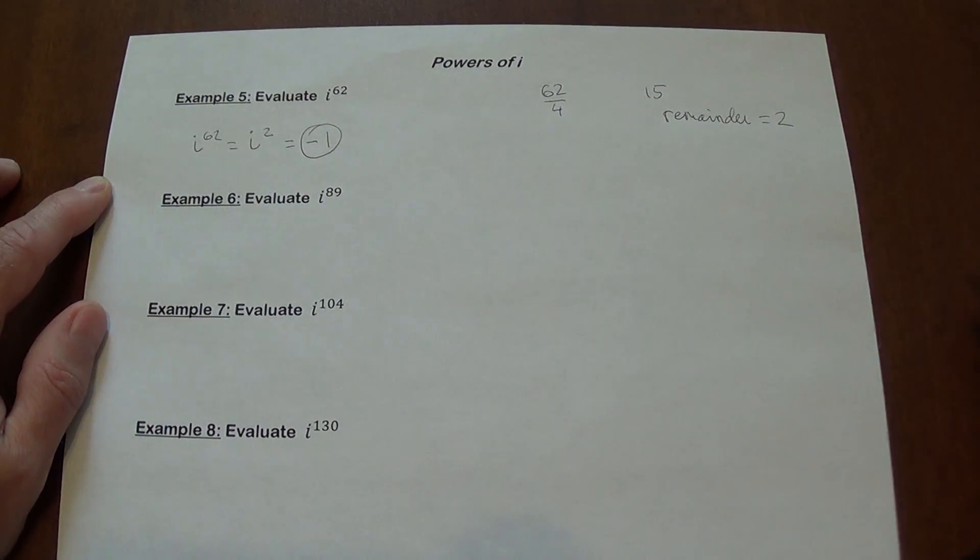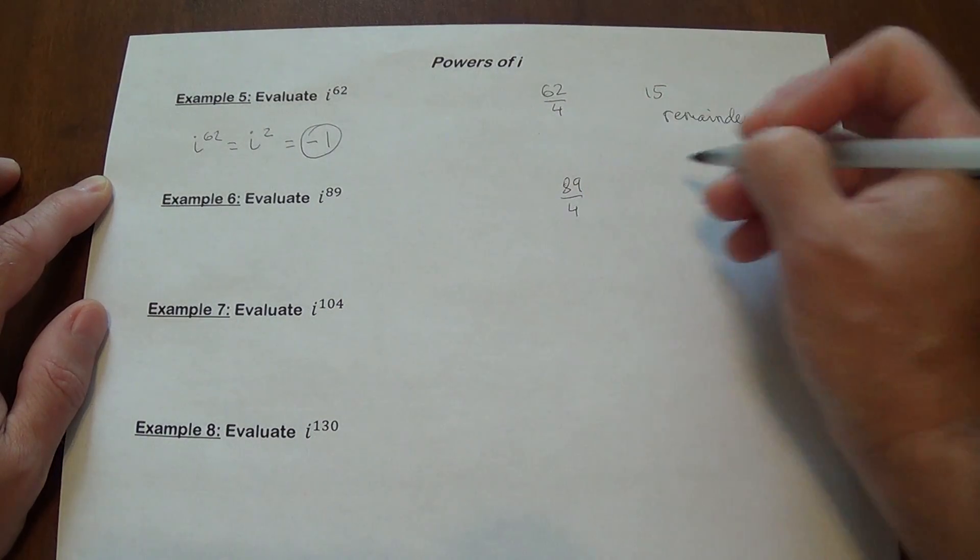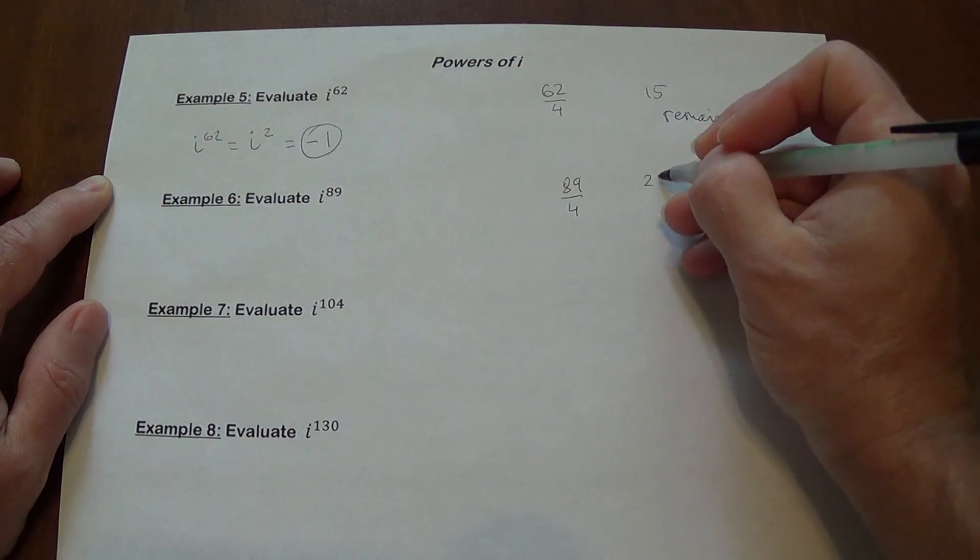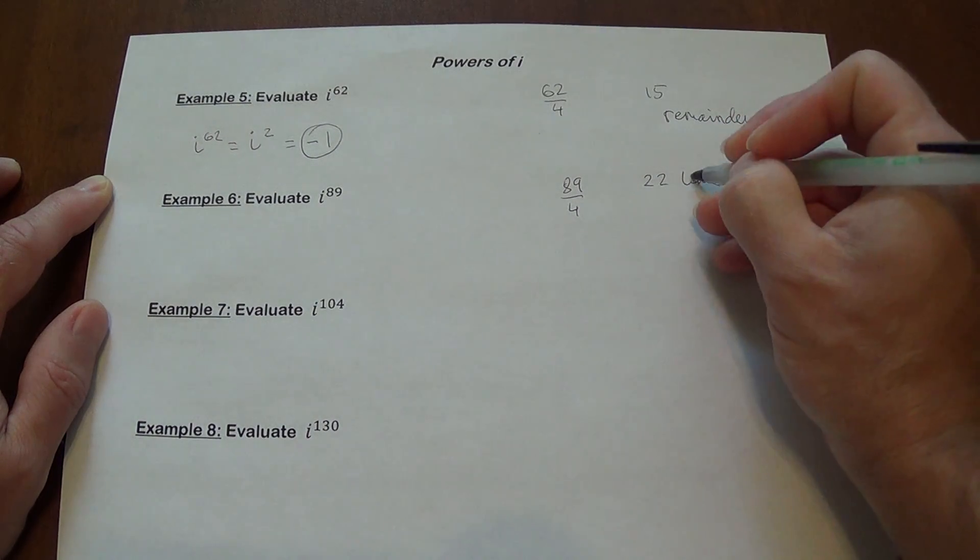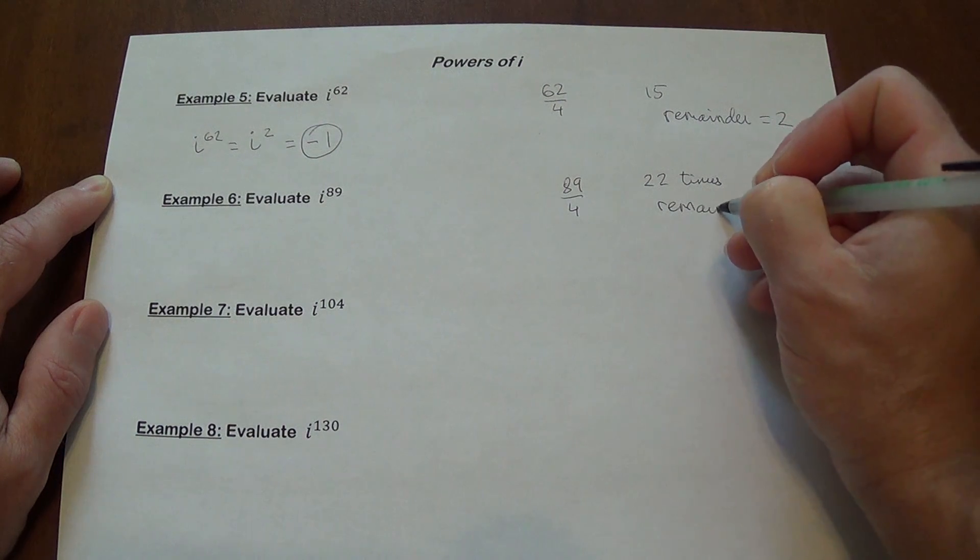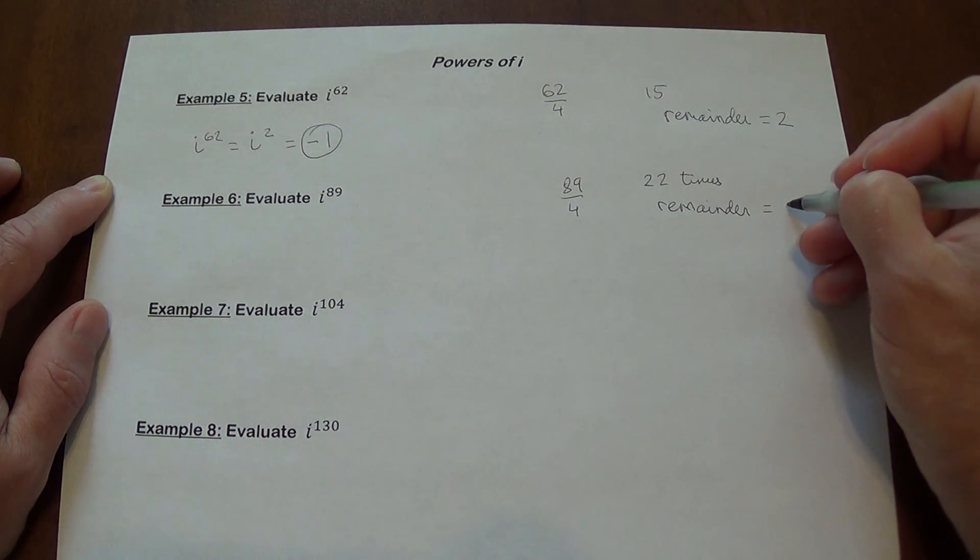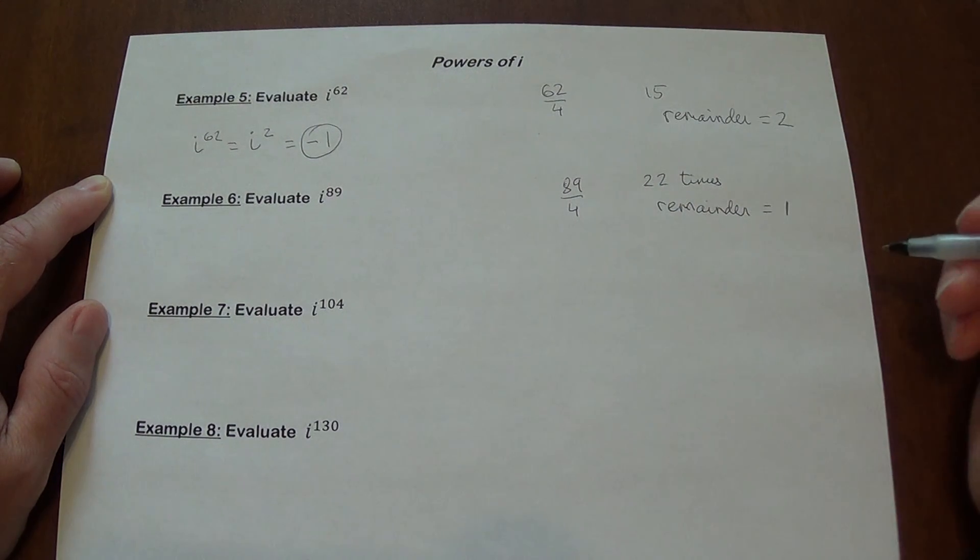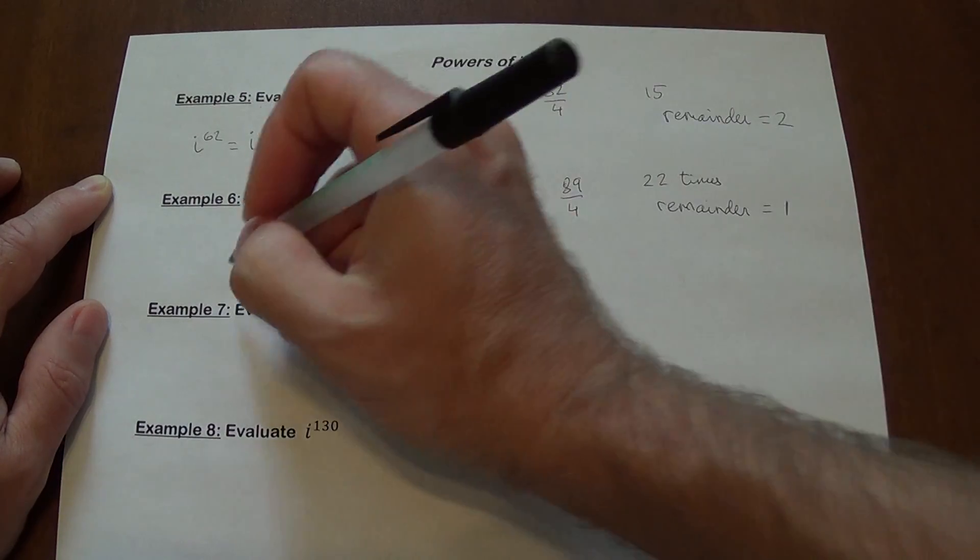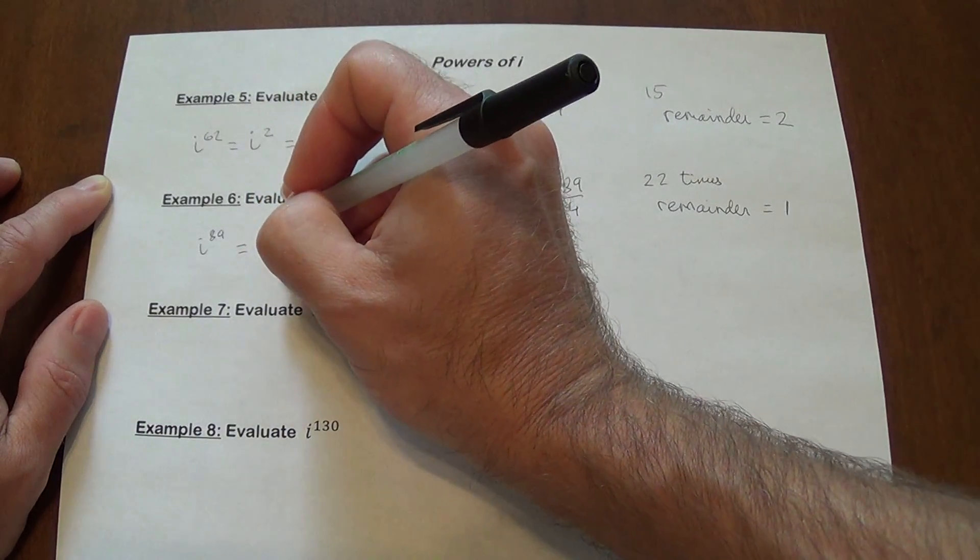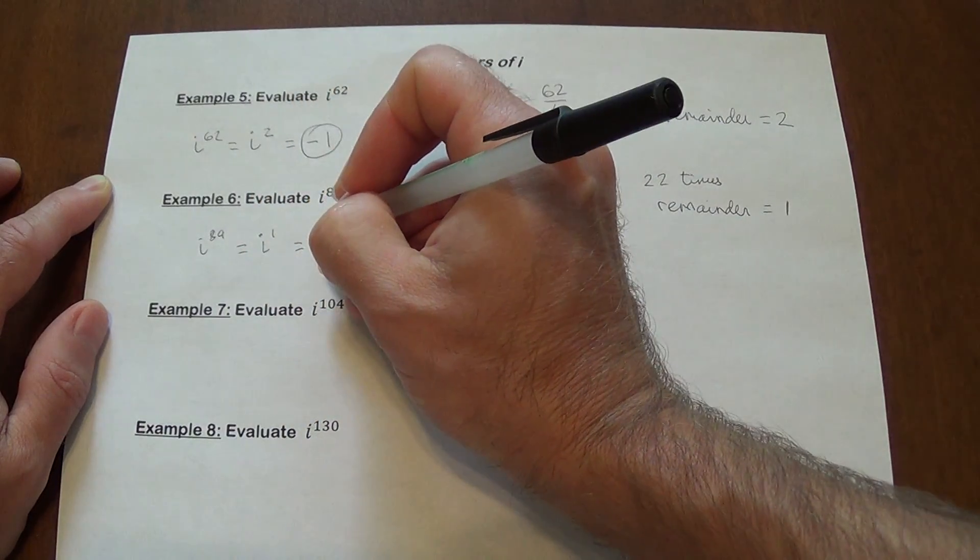i to the power of 89. If I try to divide 89 by 4, 4 goes into 89 how many times? That looks like 22 times. Because 22 times 4 is 88. The remainder is going to be 1. 4 times 22 is 88, and we're going up to 89. So there's one more. That means that i to the power of 89 is exactly the same thing as i to the first power. And it is just i.